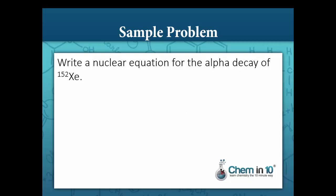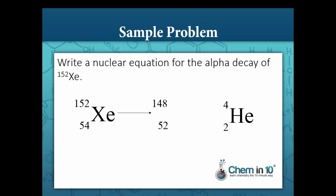New sample problem: Write a nuclear equation for the alpha decay of xenon-152. We are starting with the same isotope, xenon-152, but now undergoing alpha decay. When xenon undergoes alpha decay, it emits an alpha particle with a mass number of 4 and atomic number of 2. The atomic number of our new nuclide is 52, because 52 plus 2 equals 54, and it has a mass number of 148, because 148 plus 4 equals 152. Our new nuclide is tellurium.